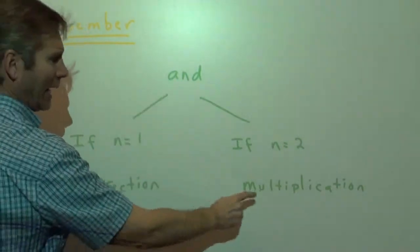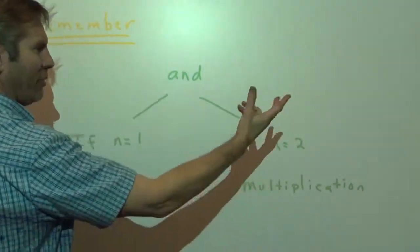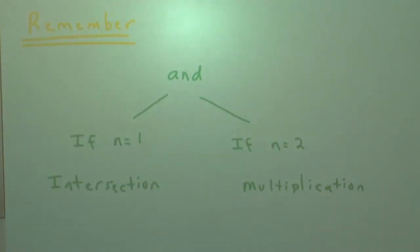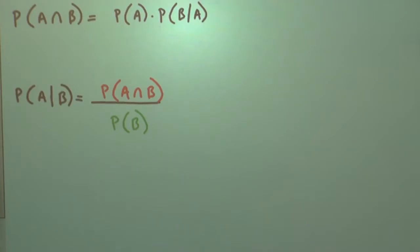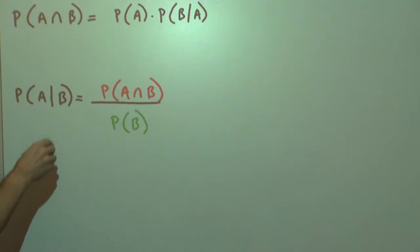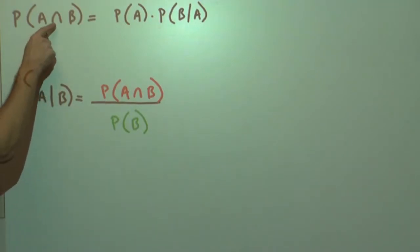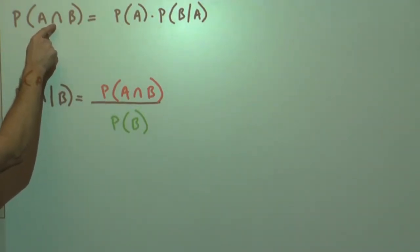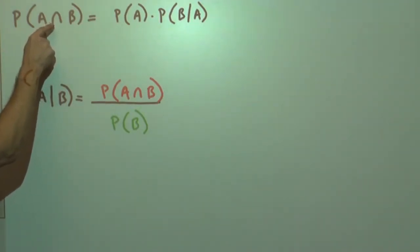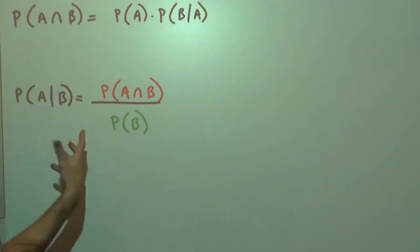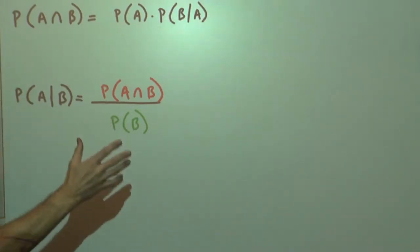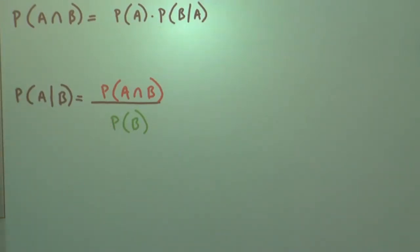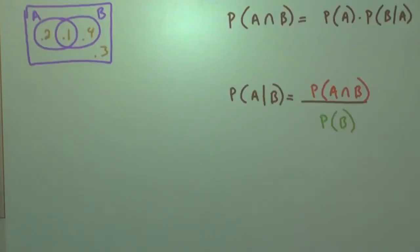The word AND means to multiply if you're selecting more than one thing. So we have these two formulas, and I would rather this said AND instead of intersection, because it can mean either multiply or intersection depending on how we look at things.